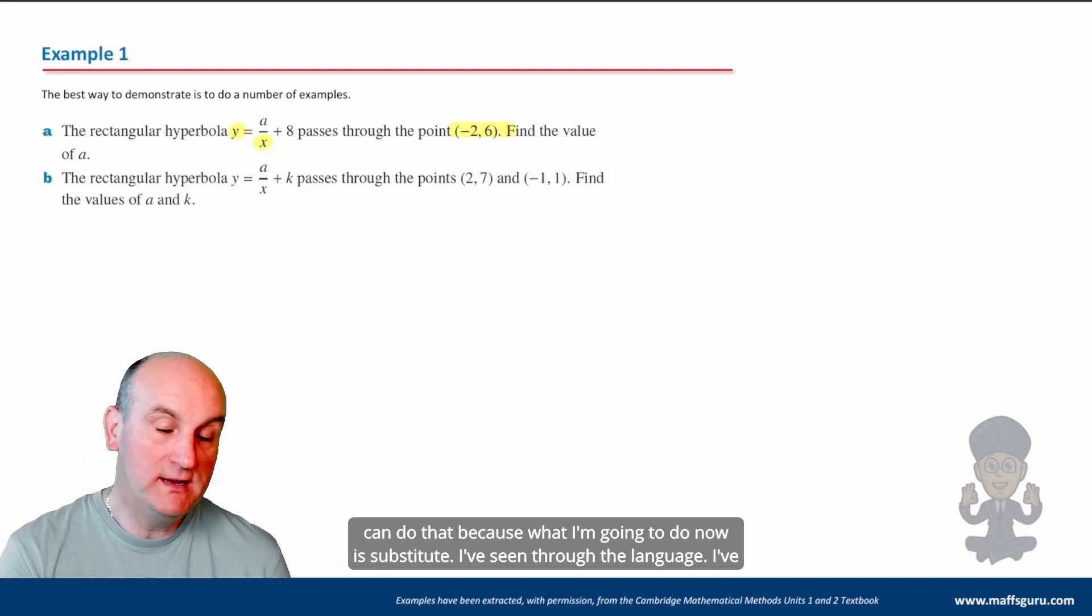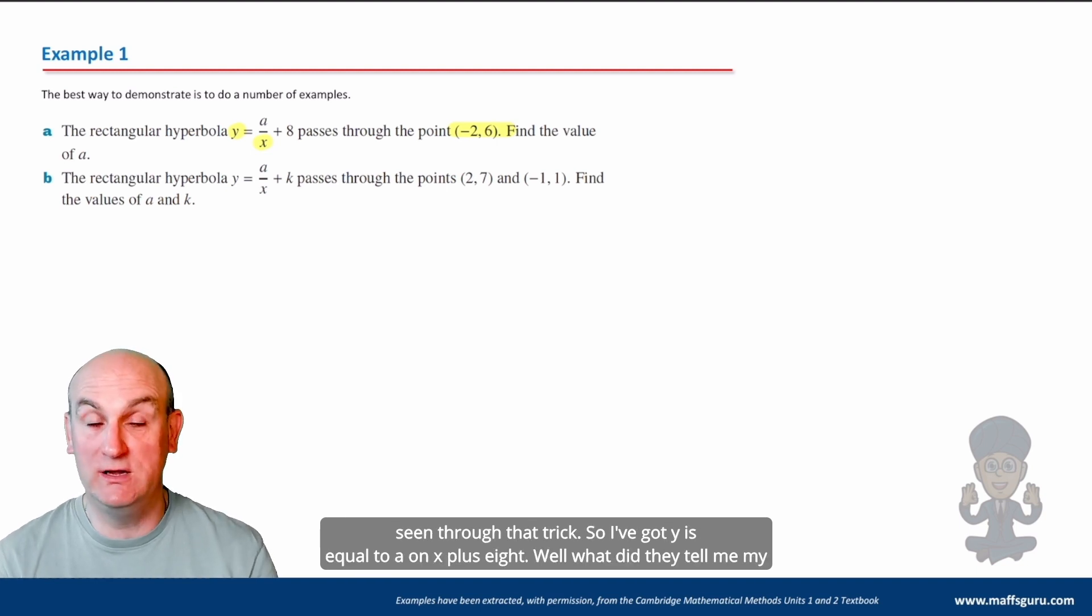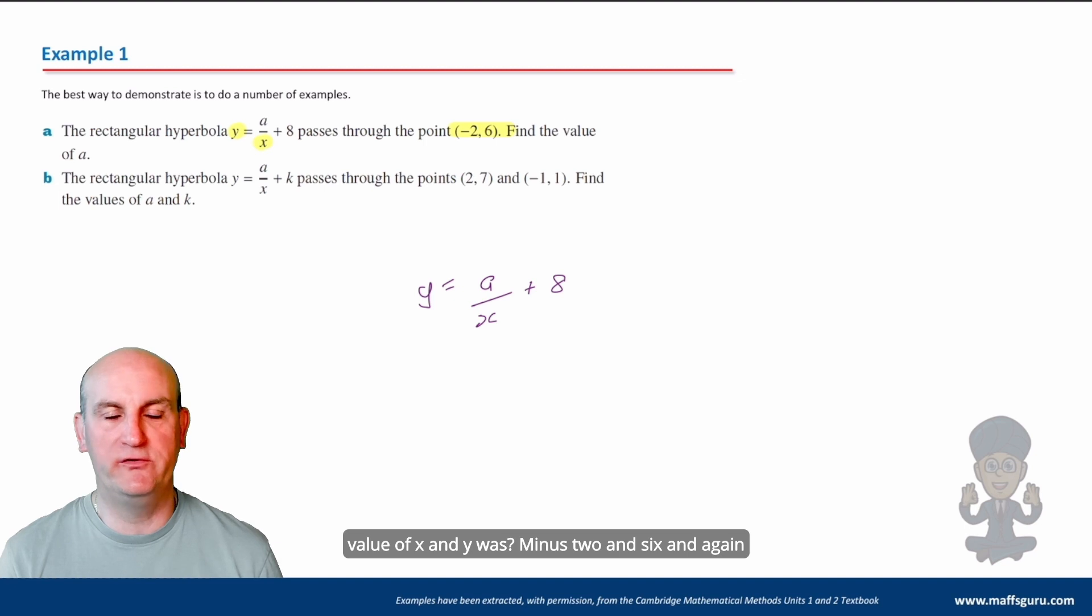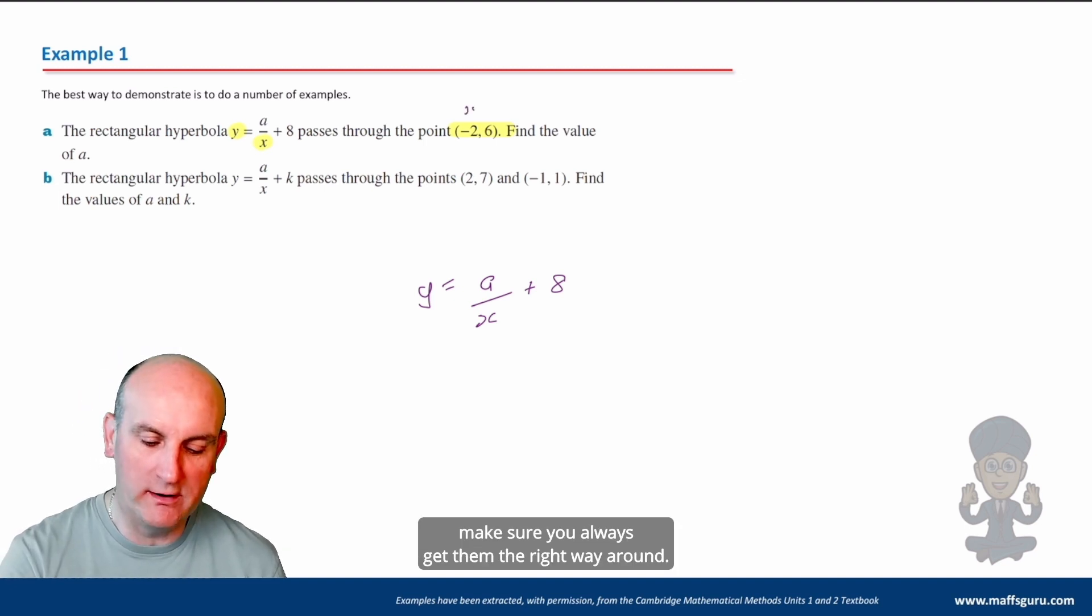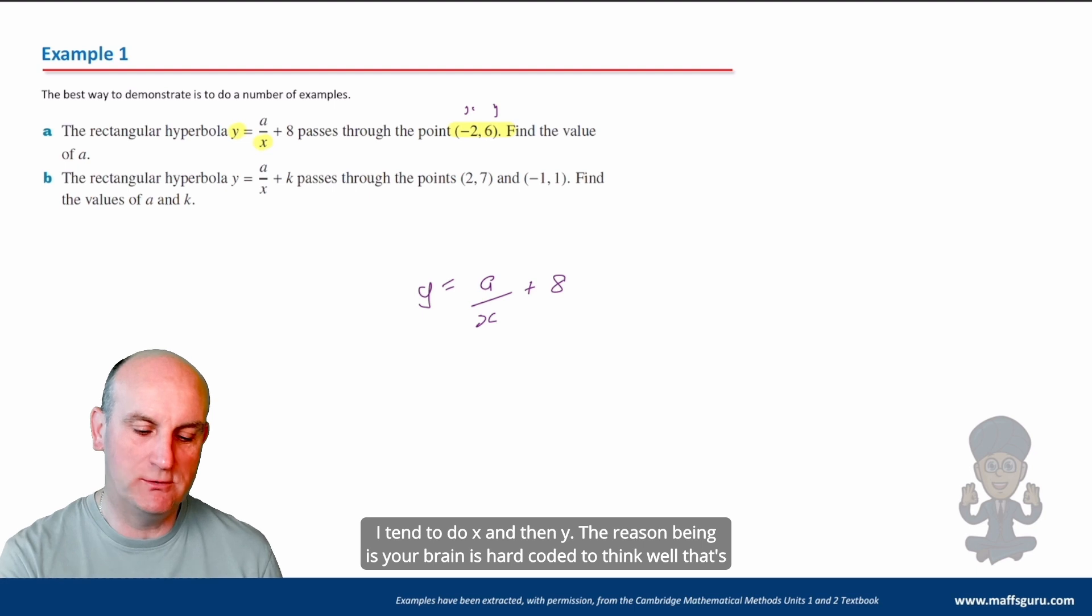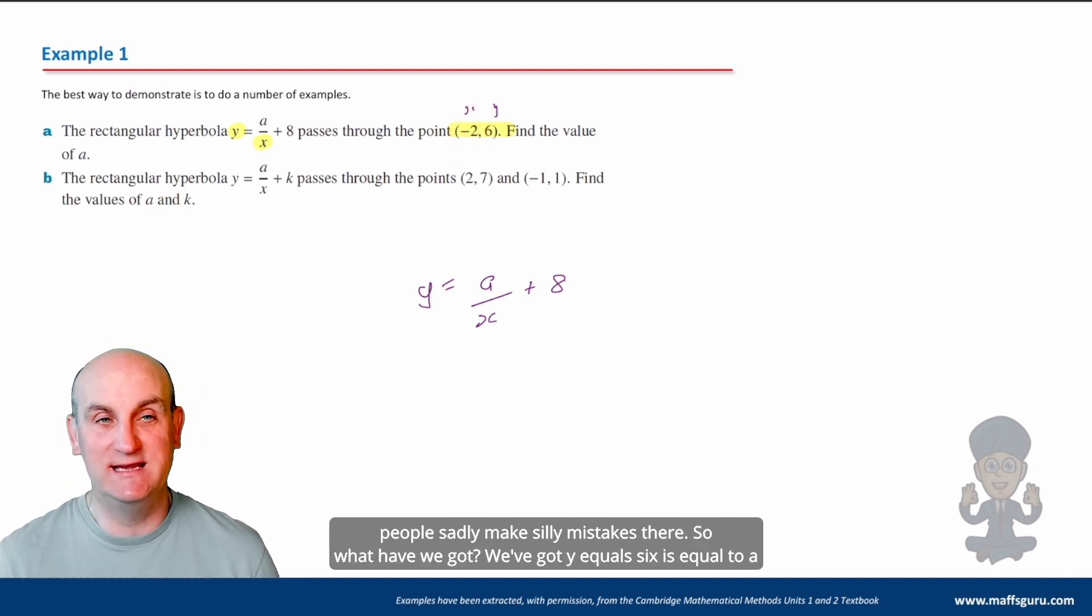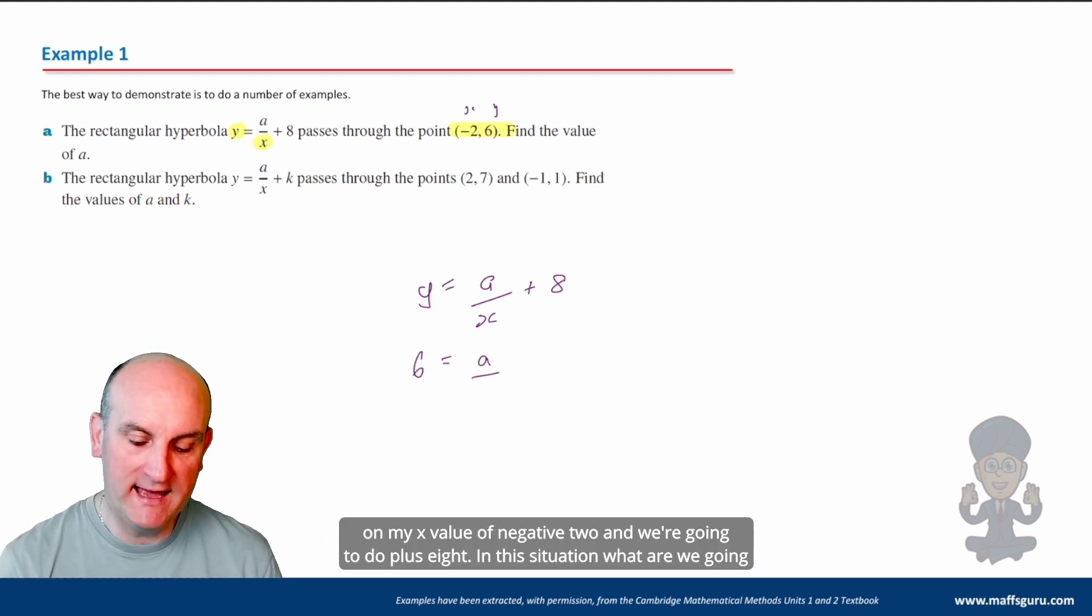So it says find the value of a. All right, we can do that because all I'm going to do now is substitute. I've seen through the language. I've seen through that trick. So I've got y is equal to a/(x+8). Well, what did they tell me my value of x and y was? Minus 2 and 6. And again, make sure you always get them the right way around. I tend to do x and then y. The reason being is your brain is hard-coded to think, well, that's the first thing in the equation. So I'm going to use the first thing there, minus 2. And lots of people sadly make silly mistakes there. So what have we got? We've got y equals 6 is equal to a on my x value of negative 2. And we're going to do plus 8.